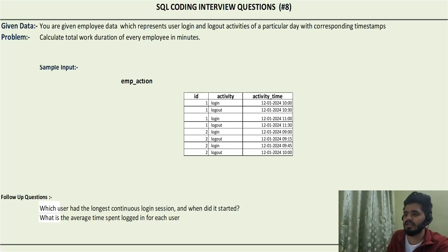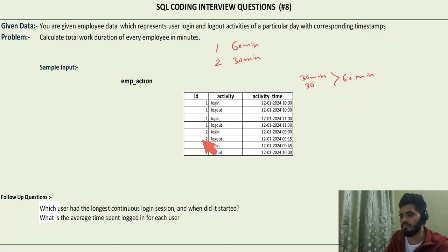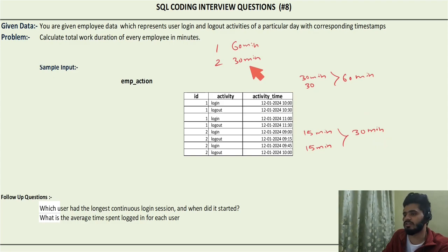Let's see how that output is derived. Employee one logs in at 10 and logs out at 10:30 — that's 30 minutes. Then he logs in again at 11 and logs out at 11:30 — another 30 minutes. So 30 plus 30 gives 60 minutes total for employee one. Similarly, employee two logs in at 9 and logs out at 9:15 — 15 minutes — then logs in again at 9:45 and logs out at 10 — another 15 minutes — giving 30 minutes total.